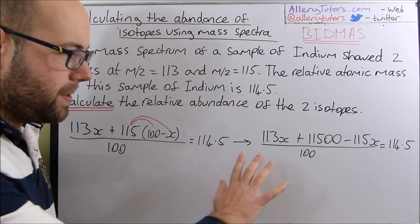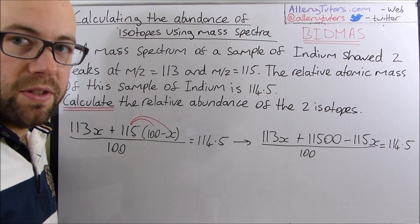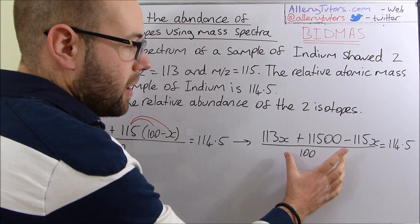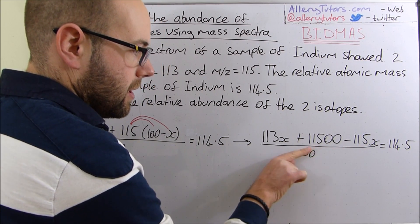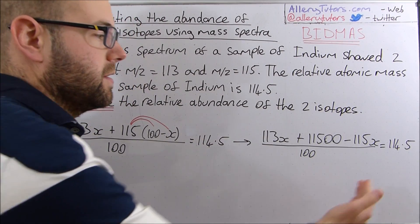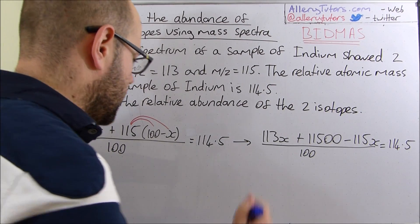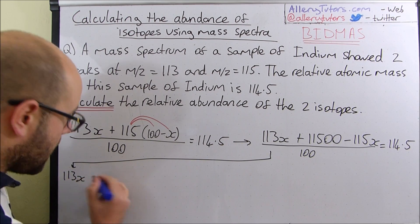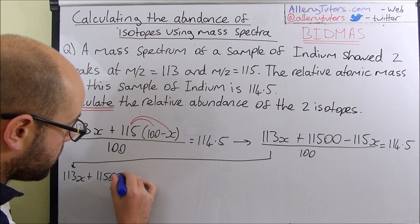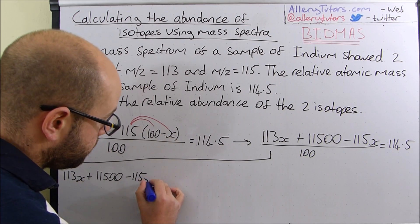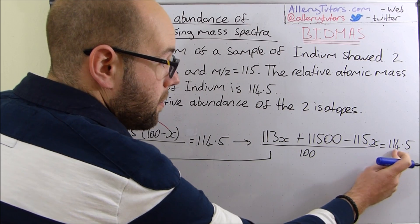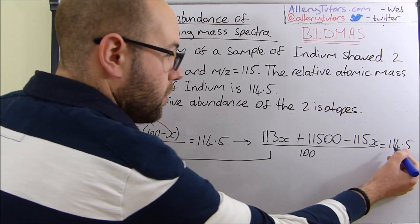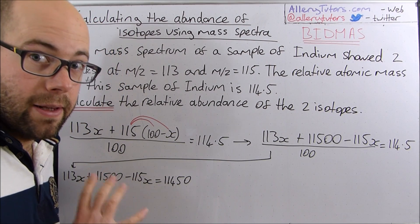The next thing is indice. There are no indices in here, no powers, so that's fine. We've gone to the next bit which is division. Our division is divide by 100. So to get rid of divide by 100 you just multiply by 100. We multiply the left hand side by 100 to cancel out. We've got to do exactly the same to the right hand side. So we're going to multiply 114.5 by 100 as well. So we have 113X plus 11500 minus 115X. Divide by 100 goes, and that gives us 11450.